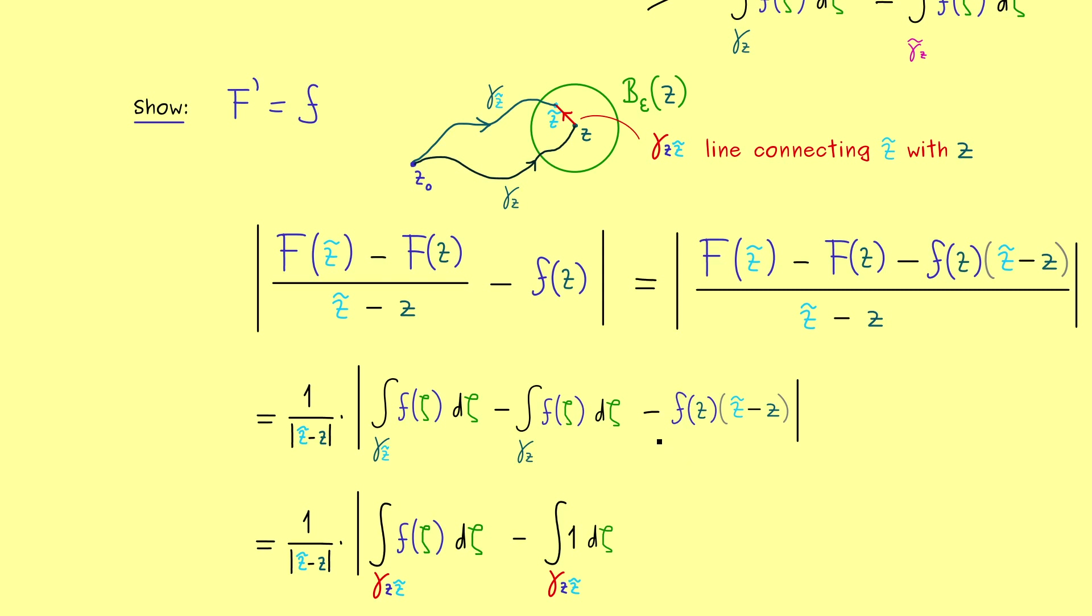Okay, then the only thing missing is that we also have to bring in the constant f of z. Indeed, this is simple, instead of 1 we use this constant. So there you see again, it was very important that we have chosen zeta as our integration variable. Indeed, it's easy to distinguish from z.